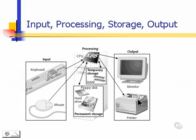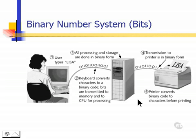Computers use different languages than we use. Computers use a series of ones and zeros, which we call bits. The reason computers use bits is because they only know two states: on or power up, and off or power down. We'll be referring to bits many times during this discussion.